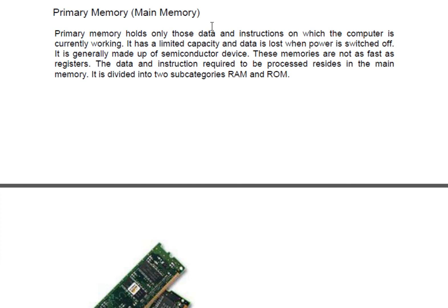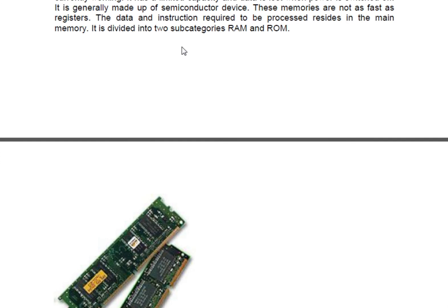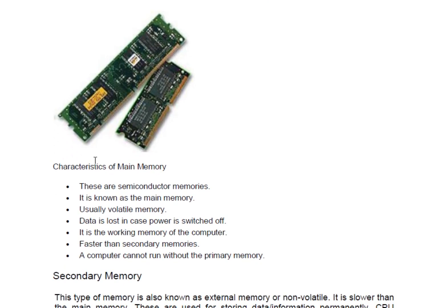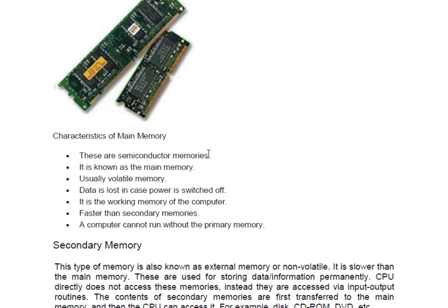Whatever instructions are given to the computer currently, in working condition, are stored by primary memory. These memories are not as fast as registers — registers are another type of memory similar to cache memory, which are very fast. Primary memory is divided into two subparts: RAM and ROM. The characteristics of main memory are: these are semiconductor memories, similar to cache memory. Main memory is also usually volatile memory — volatile means data stored in memory remains only while electricity is continuous. If electricity goes off, the data is flushed out.